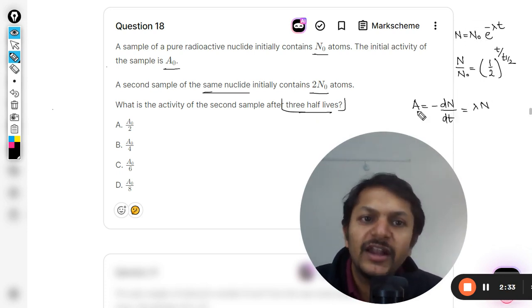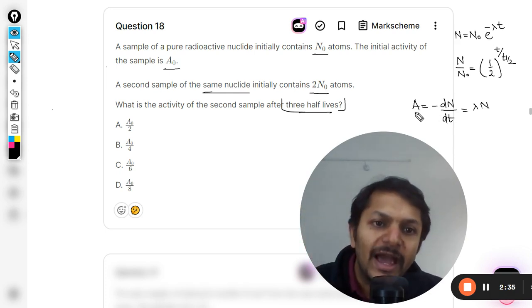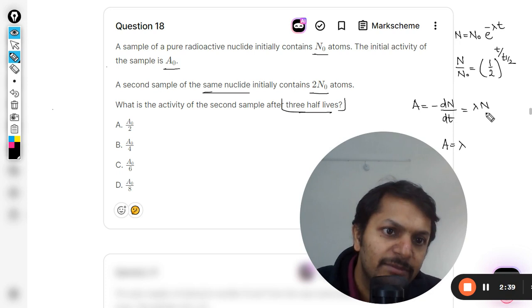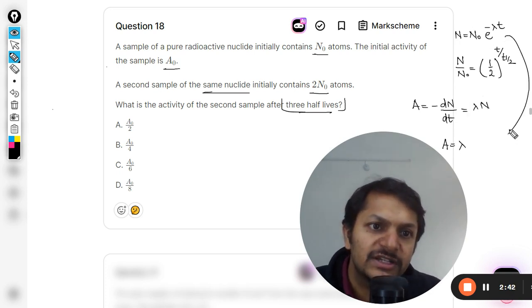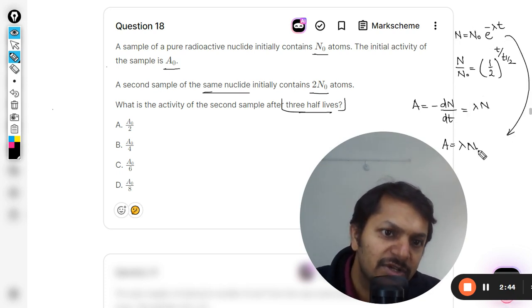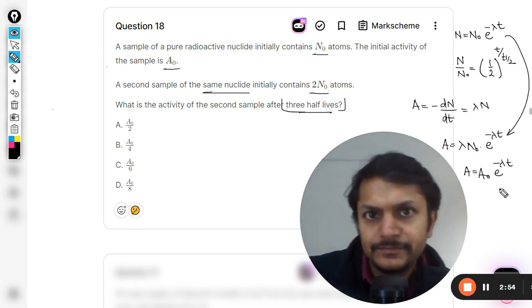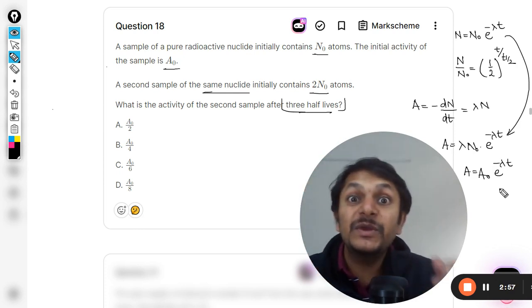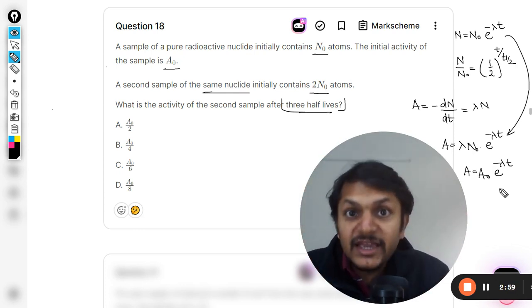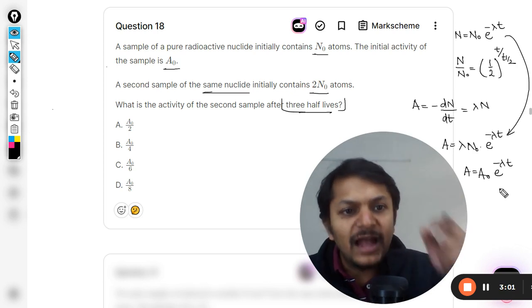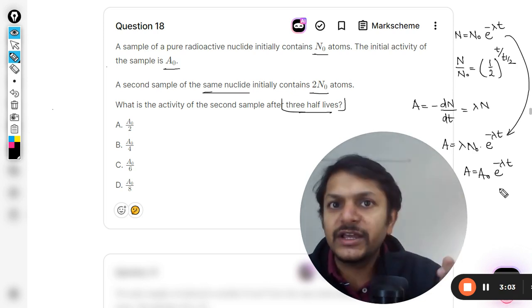On integrating, you get this formula. But we are now interested in activity. So activity is given by A = λN. I'm going to substitute this, so it becomes λN₀e^(-λt). I can say that even the activity is following the exponential pattern. The rate at which decays are happening is also reducing in an exponential manner.